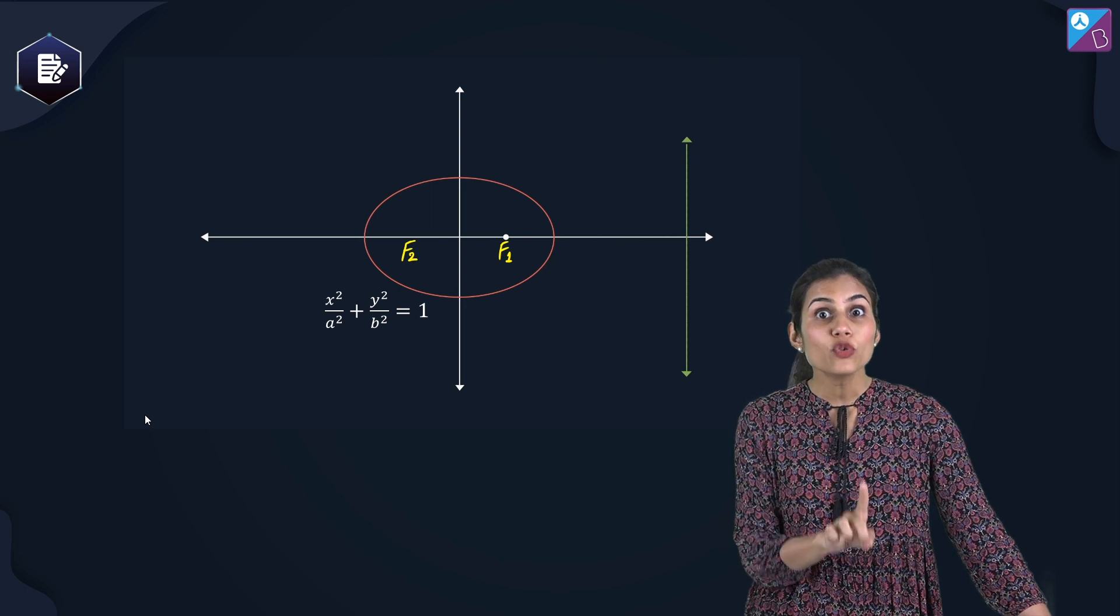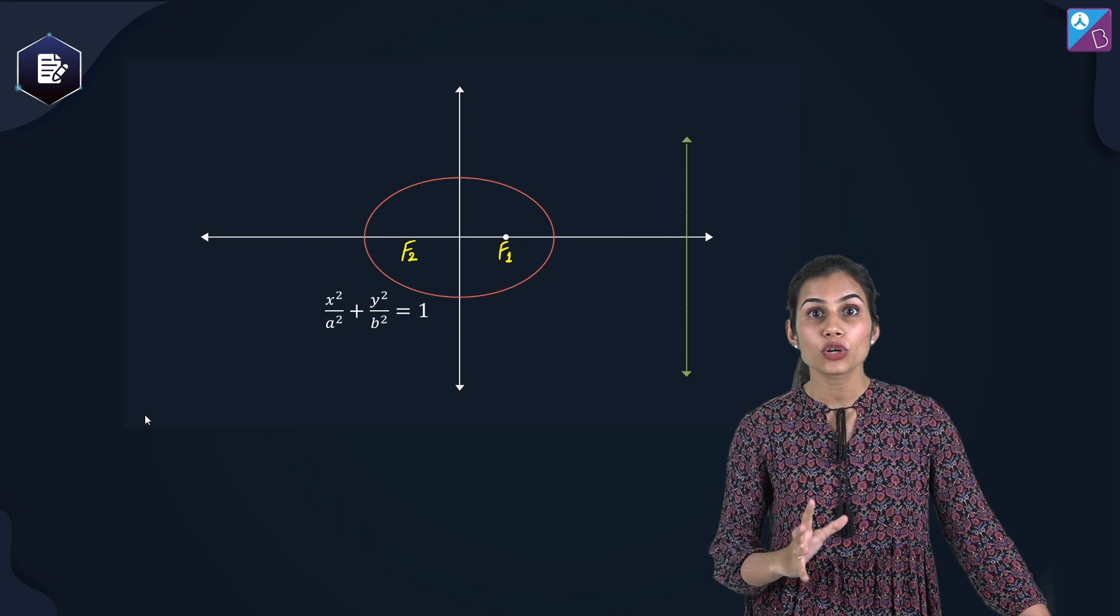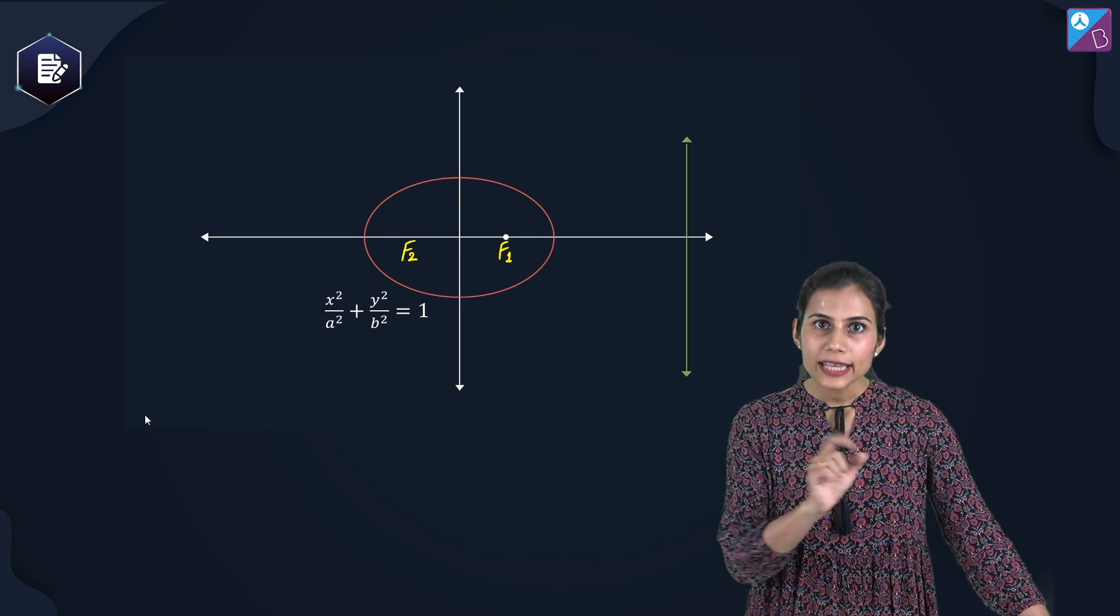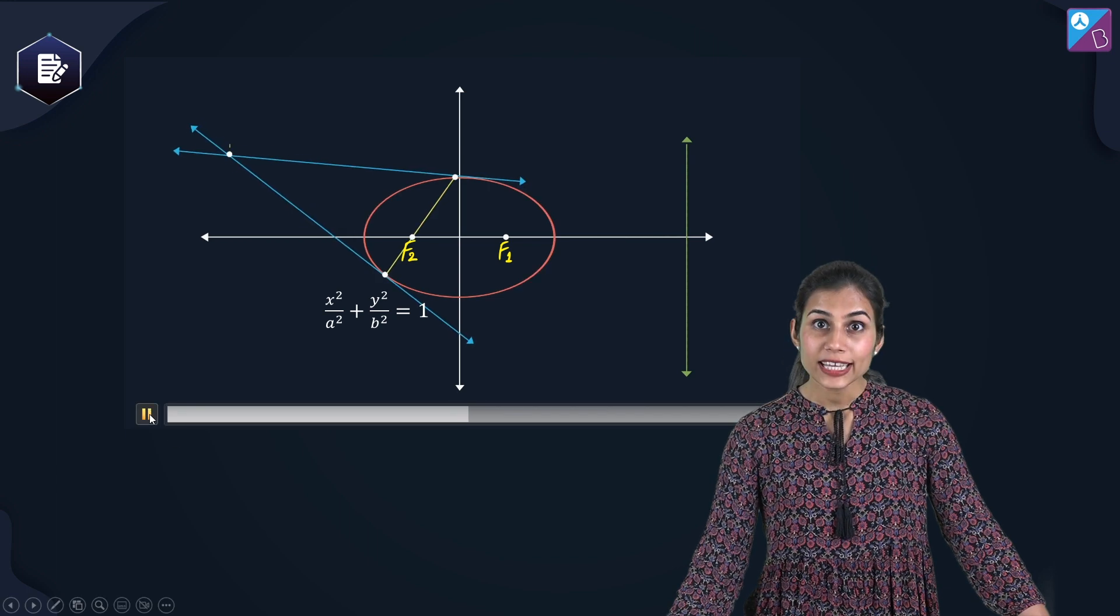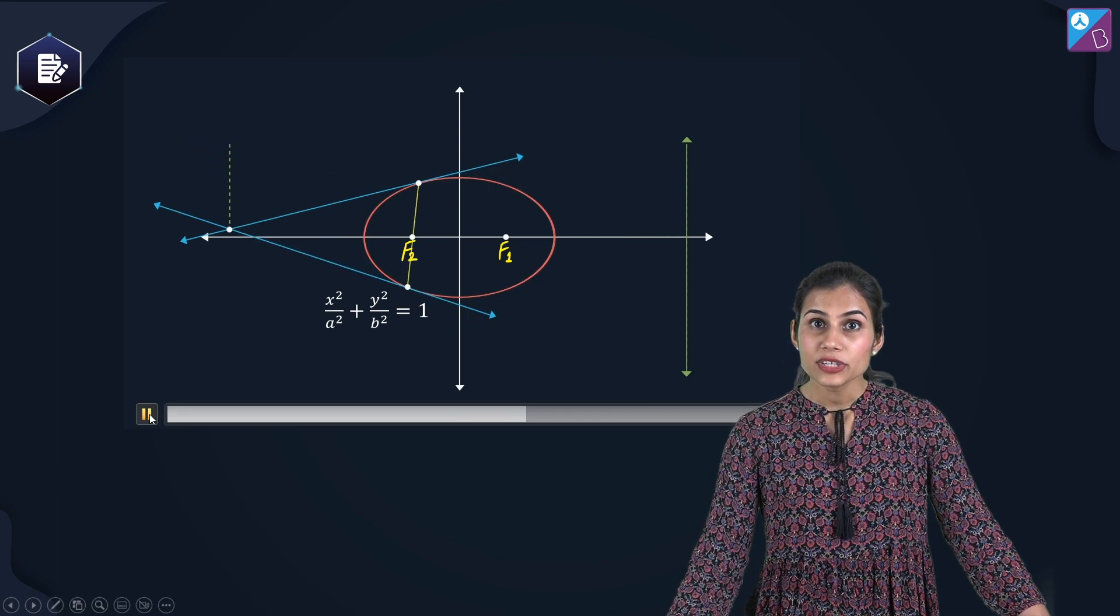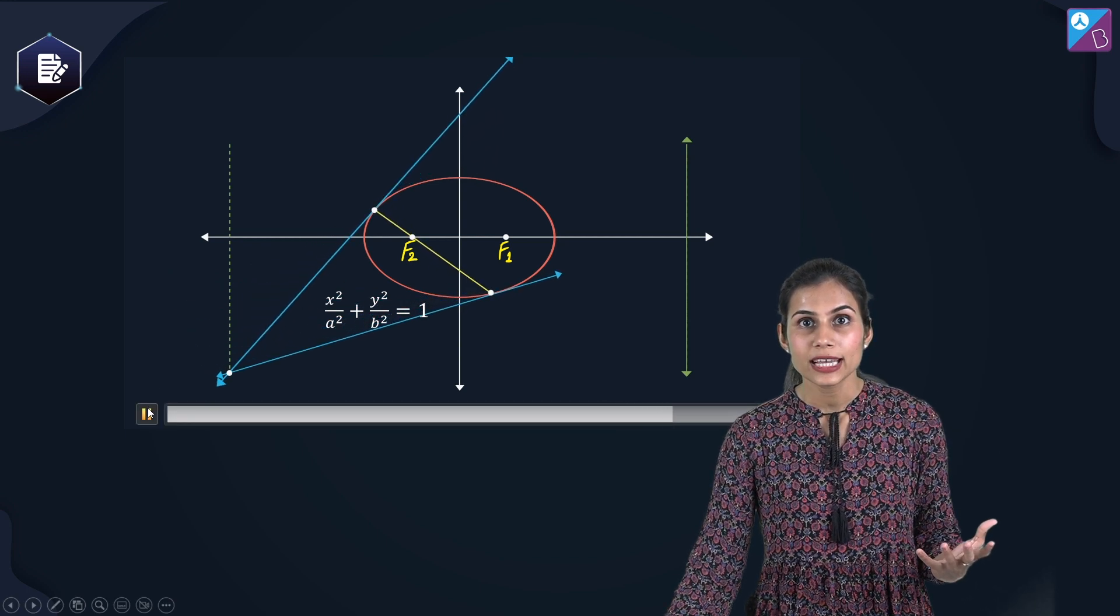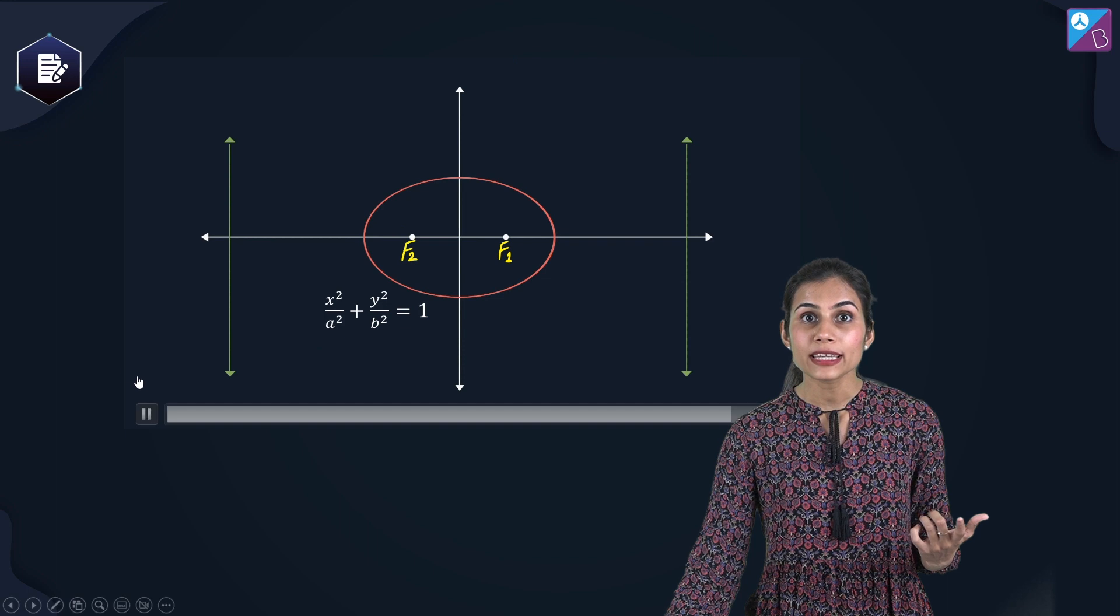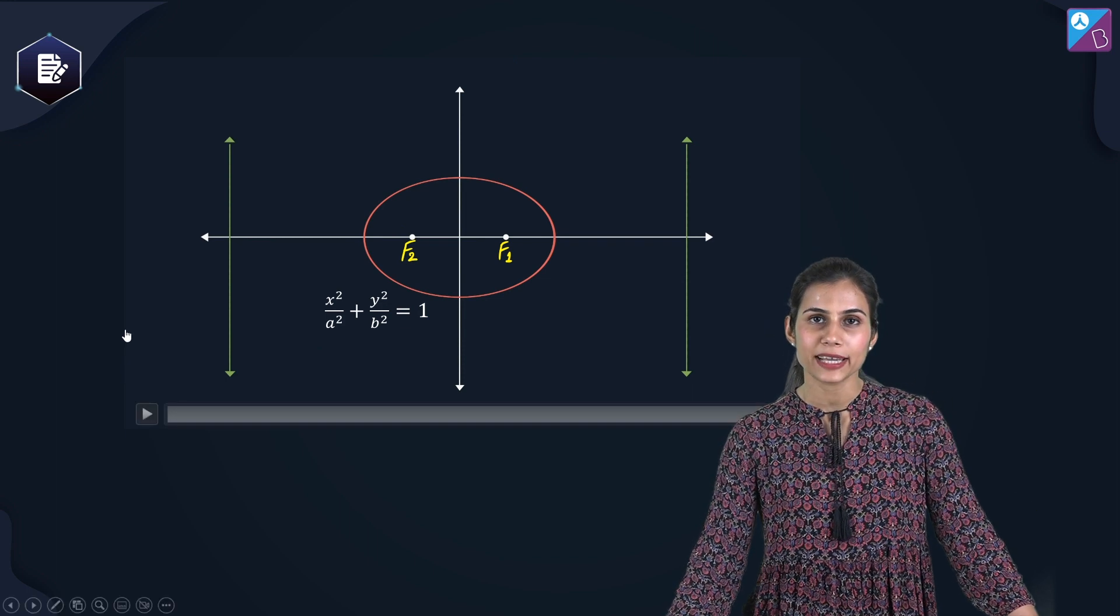Similarly, if I move on to the focus F2 and consider all the focal chords passing through F2, then again the same story holds true. As you keep changing F2, the respective points of intersection of the pair of tangents keeps changing. And when you join all of them, what you end up getting is your next directrix which is x equals minus a by e.